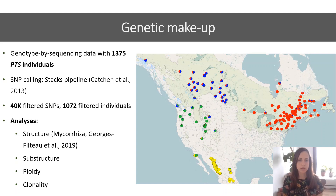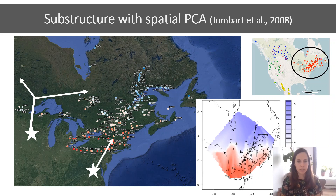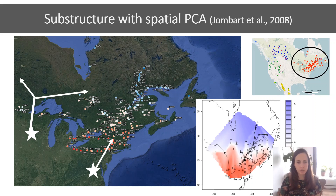Moreover, I identified substructure for most clusters. One example of substructure identified using spatial PCA is a clear gradient from north to south in the cluster encircled in black in the corner on the right. The figure indicates that samples with a similar color are genetically more similar — samples in the north that are more bluish are genetically more similar, while samples in the south that are more reddish are also more similar. This pattern can be explained by the presence of multiple glacial refugia in the east of the United States during the Last Glaciation. It is proposed that expansion after the Last Glaciation happened from a more western refugia and a more eastern refugia, indicated by white stars, with postglacial expansion shown by arrows.